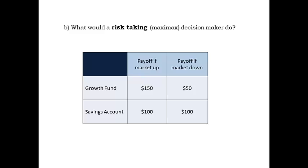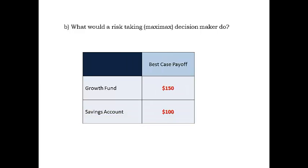Next, consider a risk taker instead. A risk-taking decision maker looks at each decision alternative and focuses on the best case outcome. For the growth fund, the best outcome is $150; for the savings account, the best outcome is $100. Comparing the best case outcomes, the risk-taking decision maker chooses the best of these. For our example, the growth fund is the choice with the best of the best payoff, or maximax for profit examples.